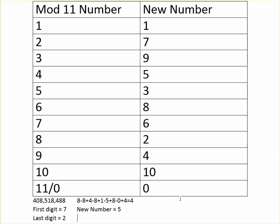We're not done with mod 11 yet. To find the middle digit, we mod 11 the actual answer we're trying to find. We already know the last digit is 2 and the first digit is 7, so the number is 7X2, where X is the unknown middle digit. We plug that into a mod 11 formula: last digit − x + first digit = new number, giving us 2 − x + 7 = 5. That simplifies to 9 − x = 5, so −x = −4, meaning x = 4.